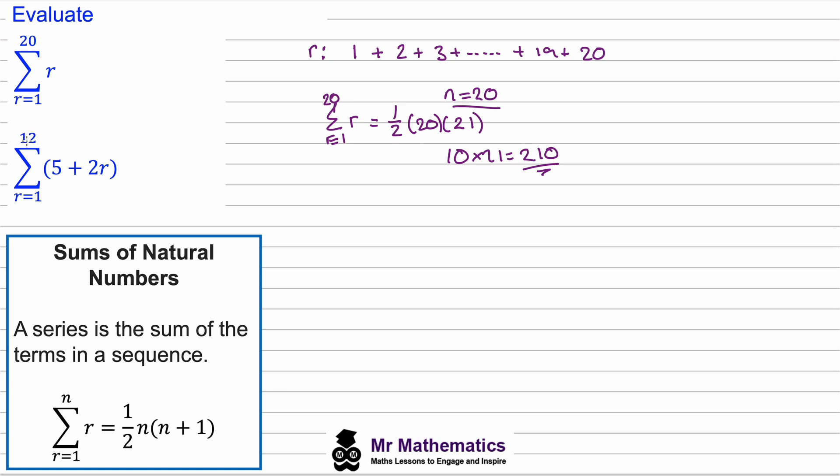Of the series 5 plus 2r. So the way we go about this is we break up this expression. We can say this would be equal to a sum of 5 between r equals 1 to 12, plus the sum between the same limits of 2r. And what we're going to do is we're going to work out each of these separately and then we'll add them together.